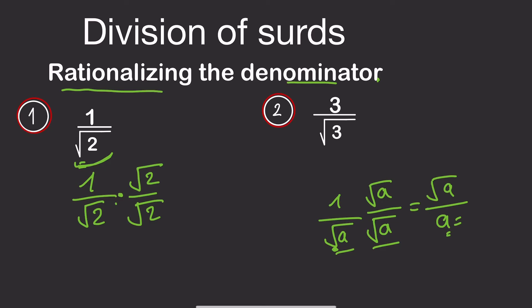So if we continue, this will give us 1 times root 2, which is root 2 — because 1 times any number remains the same: 1 times 2 is 2, 1 times 3 is 3, so 1 times root 2 gives us root 2. Now root 2 times root 2 will give us root 4.